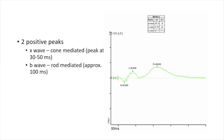Dark adapted red flash ERG has two positive peaks: the X-wave and the B-wave. The X-wave is from cones; the B-wave is from rods. In a dark adapted state, normally only rods respond. However, with a red (long wavelength) flash, there is also a cone-mediated response even in the dark adapted state — cones are still active, just not as much as in the light-adapted state. The B-wave should be greater in amplitude than the X-wave.